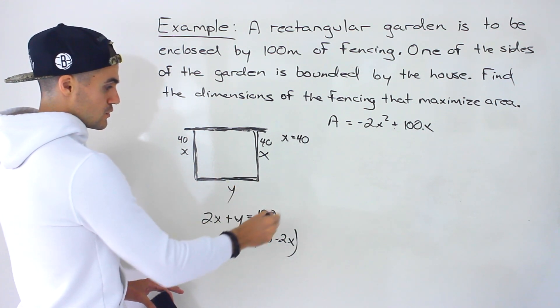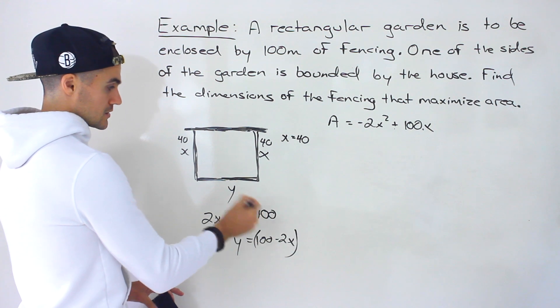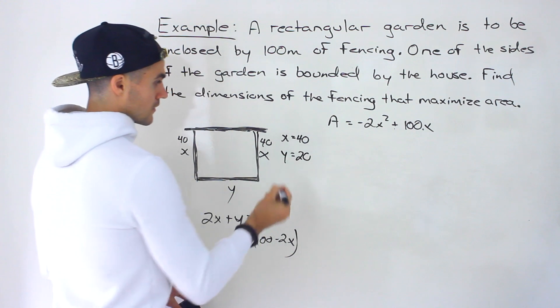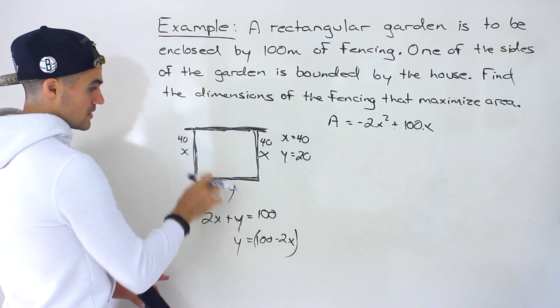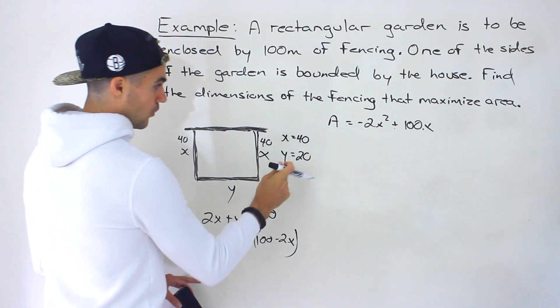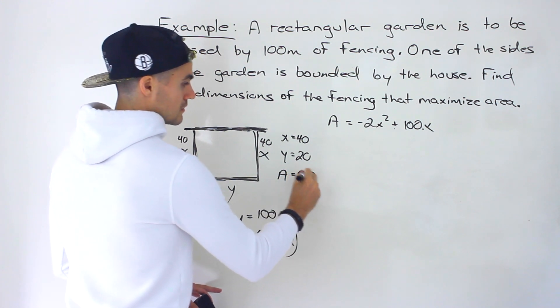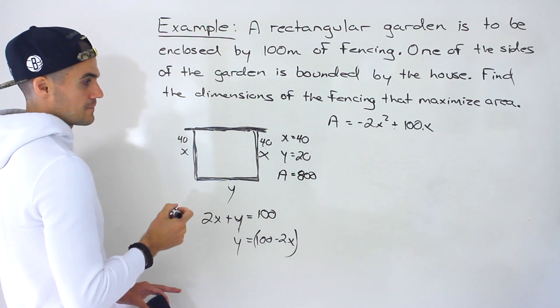Well, the fencing has to add up to 100. So then that would be, this would end up being 20. The Y value would be 20. Right? And so what would the area be? In that case, it would just be 40 times 20, which would give us 800 like that.